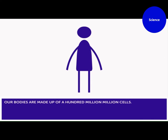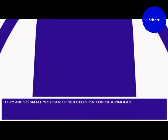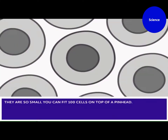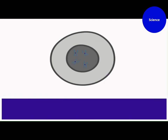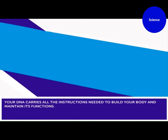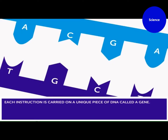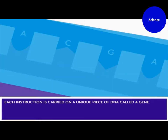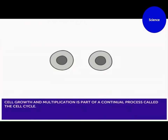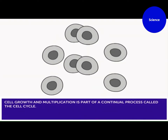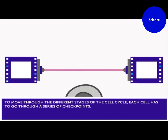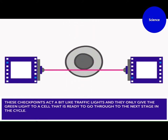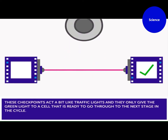Our bodies are made up of 100 million million cells. They're so small you can fit 100 cells on the top of a pinhead. Most cells have a nucleus, cytoplasm and cell membrane. The nucleus is the cell's control centre and holds the cell's DNA. Your DNA carries all the instructions needed to build your body and maintain its functions. Each instruction is carried on a unique piece of DNA called a gene. Cell growth and multiplication is part of a continual process called the cell cycle. To move through the different stages of the cell cycle, each cell has to go through a series of checkpoints. These checkpoints act a bit like traffic lights, and they only give the green light to a cell that's ready to go through to the next stage in the cycle.